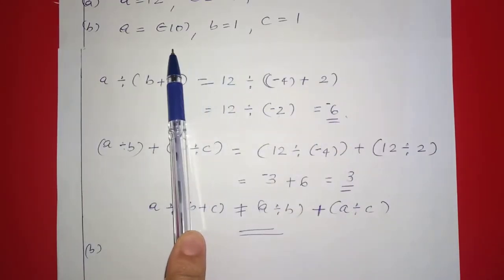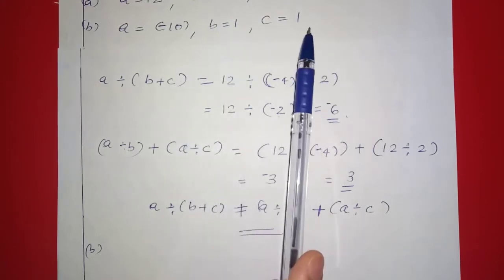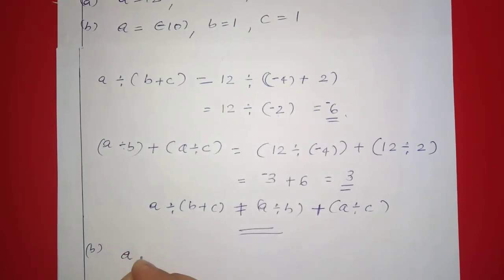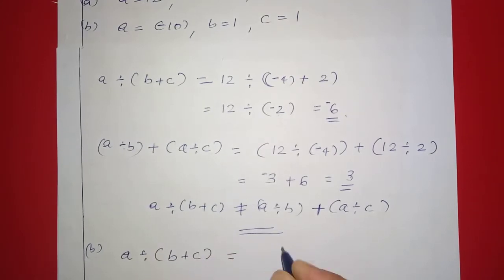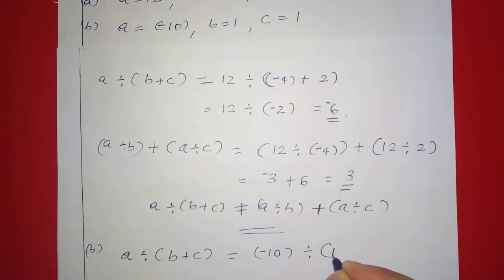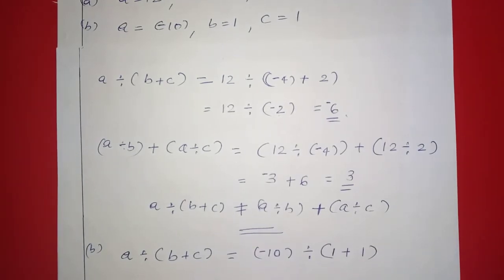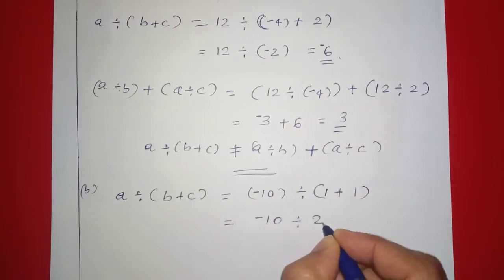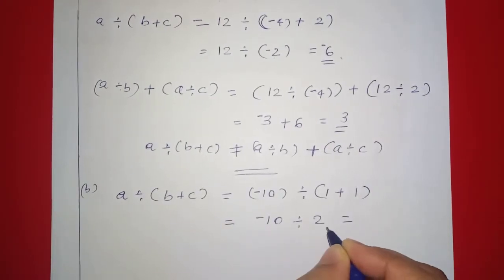Since left hand side negative 6 does not equal right hand side 3, we have verified that a÷(b+c) ≠ a÷b + a÷c. Now for the second set: a is equal to negative 10, b is equal to 1, c is equal to 1. Left hand side: a division (b plus c) is equal to negative 10 division (1 plus 1).